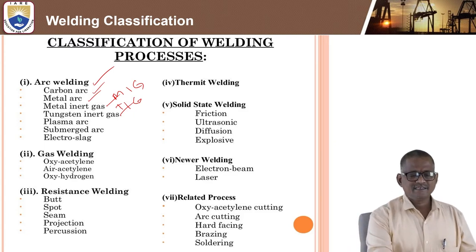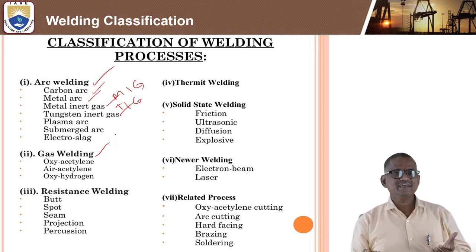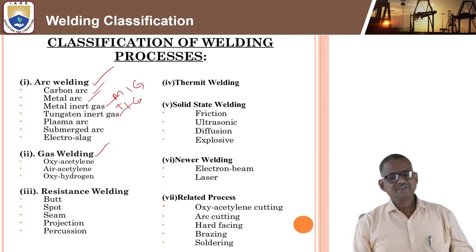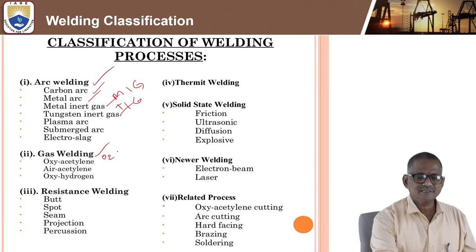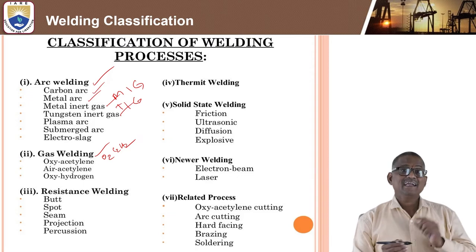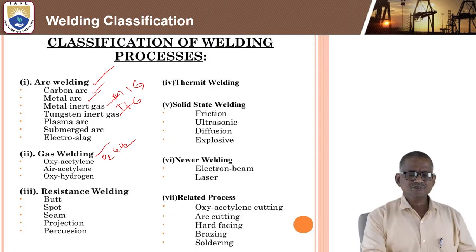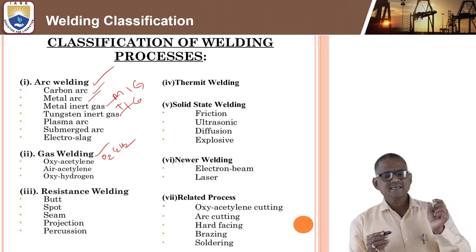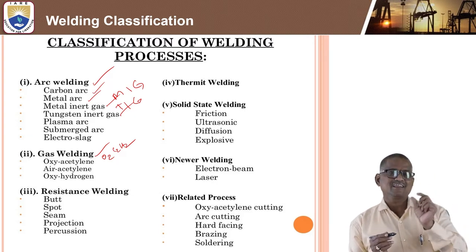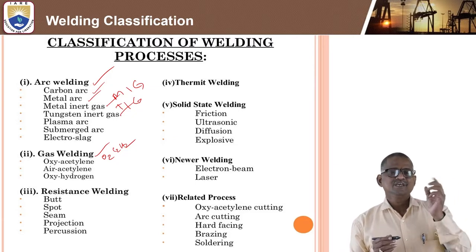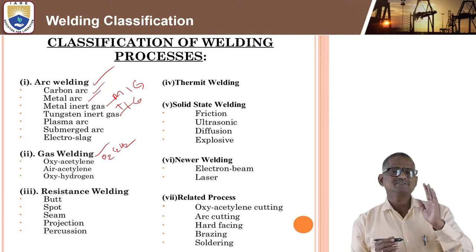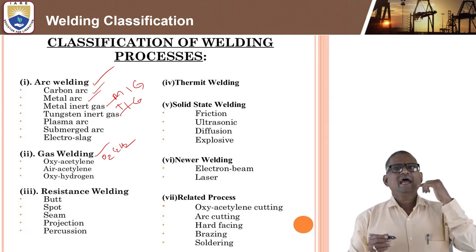Another classification is gas welding, subdivided into oxyacetylene, air acetylene, and oxyhydrogen welding. The most widely used gas welding is oxyacetylene, where the composition of oxygen and acetylene — equal, more, or less — determines the flame type.